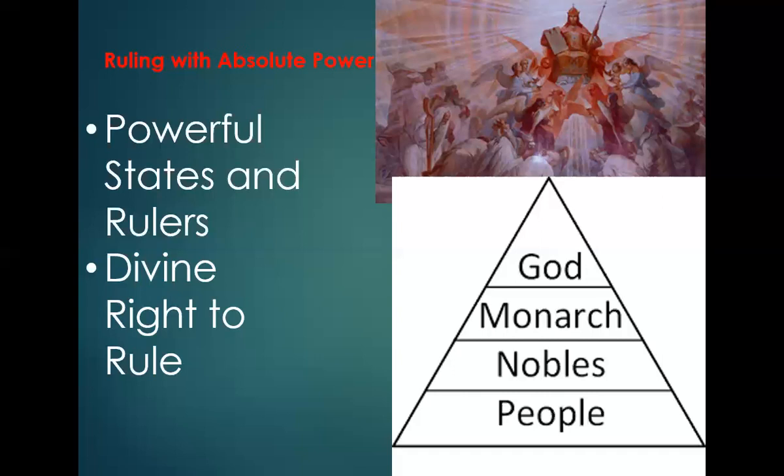By 1700, absolute monarchs reigned over most of the great powers in Europe, except England. In time, however, thinkers and others challenged divine right theory along with the entire system of absolute monarchy, calling instead for limits on government power and for governments to be responsible to the people. With those ideas in mind, we'll move forward and look at Spain and France and how they used these ideas.